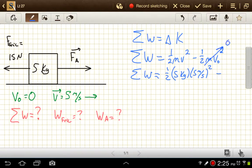The net work then is going to be 25 times five, so 125 times a half is 62.5 joules.